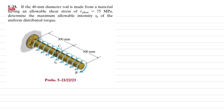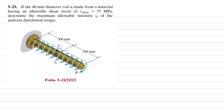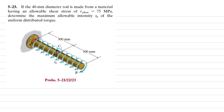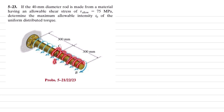Welcome back. Problem 5-23: a 40 millimeter diameter rod is made out of material having allowable shearing stress of 75 megapascals. Determine the maximum allowable intensity t₀ of the uniformly distributed torque. You can see this is the rod that is fixed at point A and acted upon by uniformly distributed torque of intensity t₀.